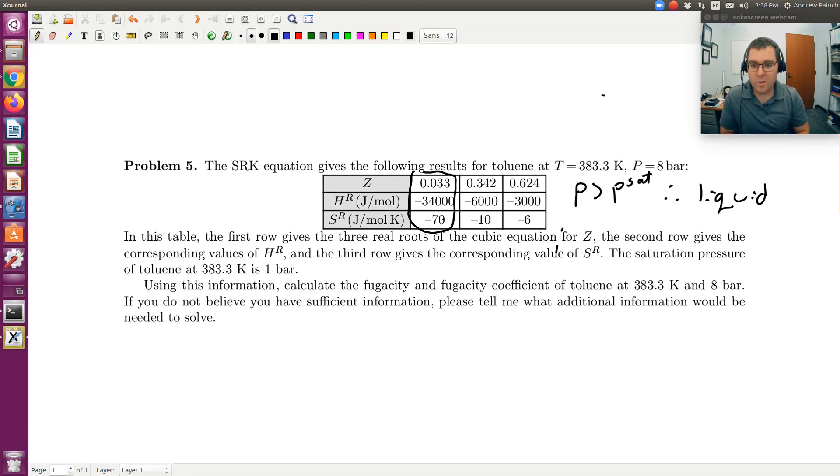If we keep going, using this information, calculate the fugacity and fugacity coefficient of toluene at 383.3 kelvin and 8 bars. If you do not believe you have sufficient information, please tell me what additional information would be needed to solve. What a fun problem.